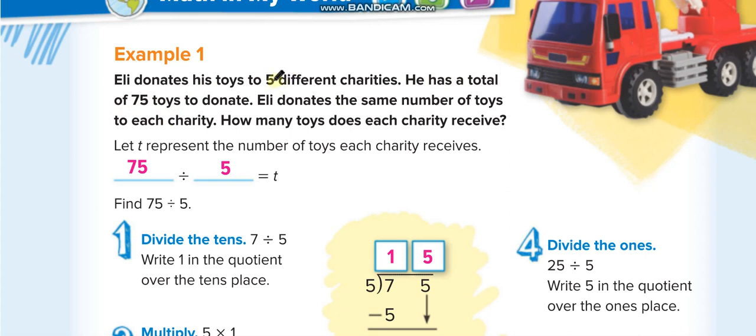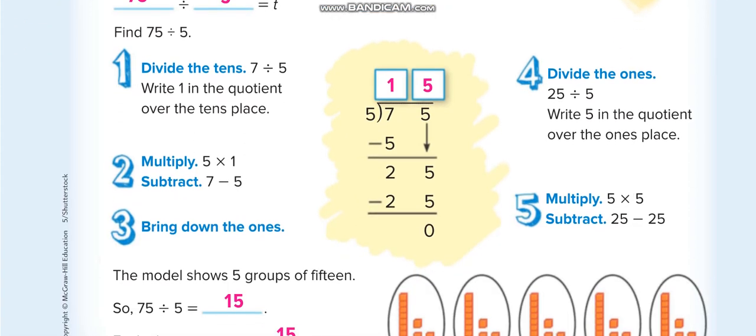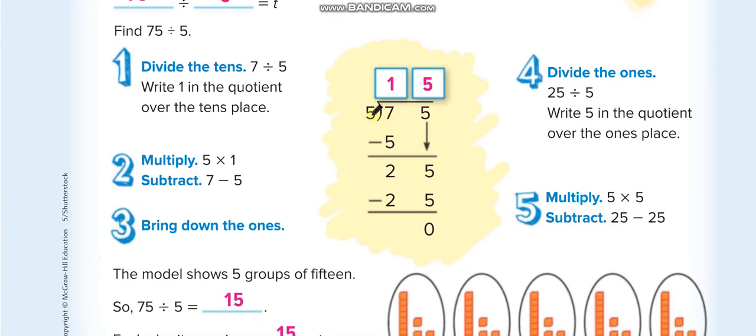75 divided by 5. 75 is dividend which will come inside, 5 is divisor out here. Now when you have one digit, you divide one by one. First one digit: 5 times what will give you 7 or less than that? You can't get more than that. So 5 times 1 equals 5, and 5 times 2 equals 10. 10 is more than 7, you can't divide by 2.